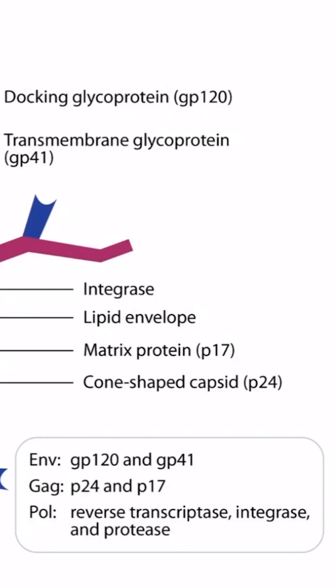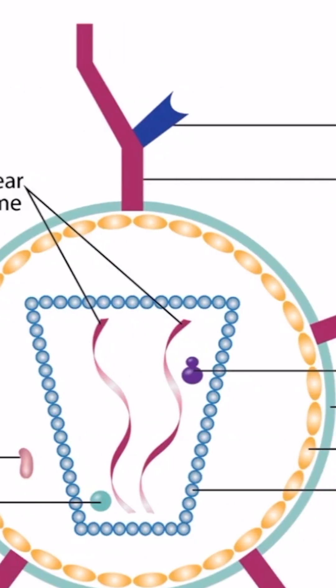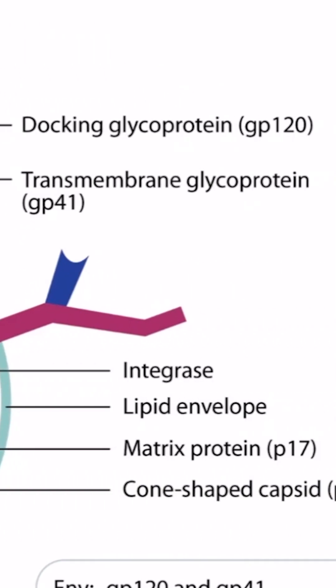If we return to this image, you can see that the ENV gene encodes for GP-120 and GP-41. GP-120 is the docking glycoprotein, and GP-41 is the transmembrane glycoprotein.